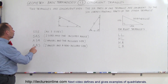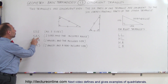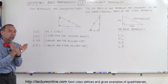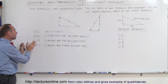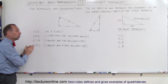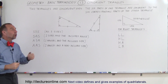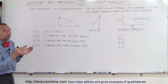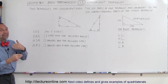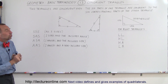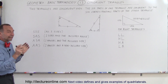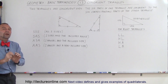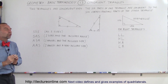It is also sufficient to show that two sides and the included angle — the angle between the two sides — are congruent. If the two sides and the angle included between them in one triangle are equal to the two sides and the included angle of the other triangle, then the two triangles are congruent. This is the SAS case.